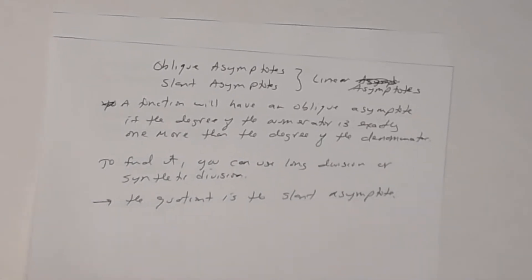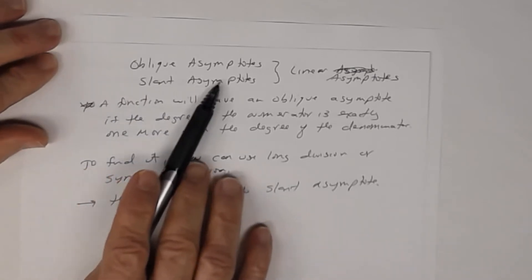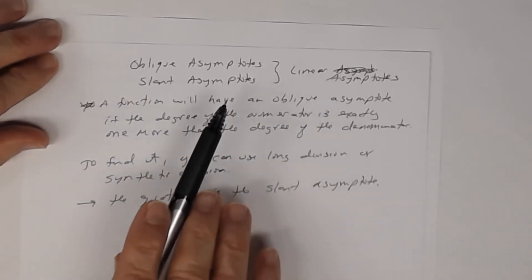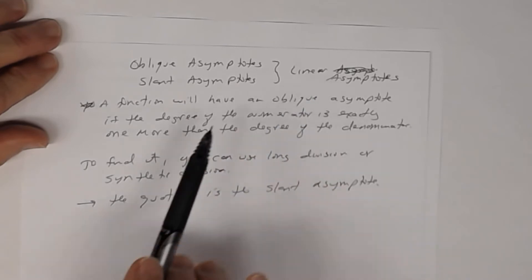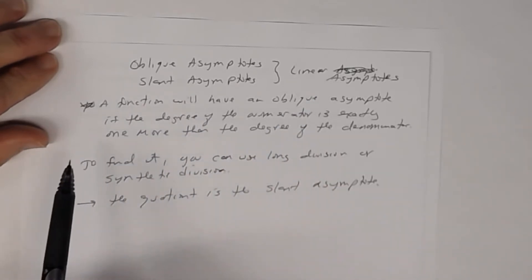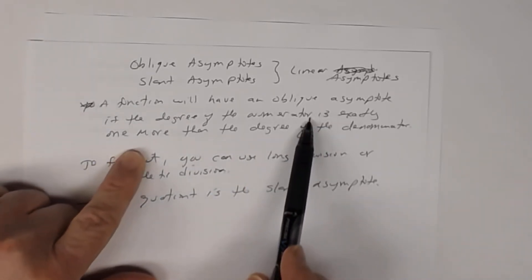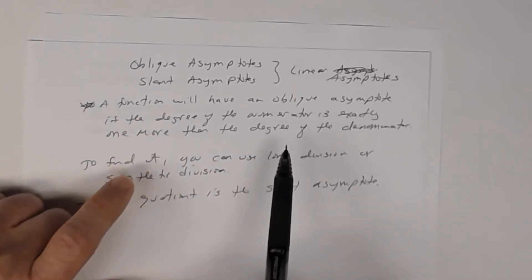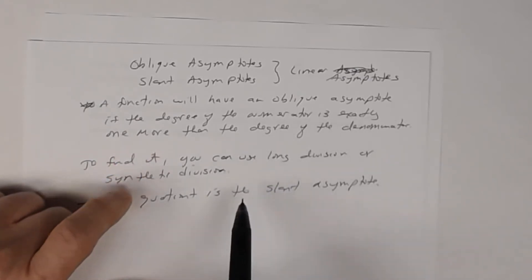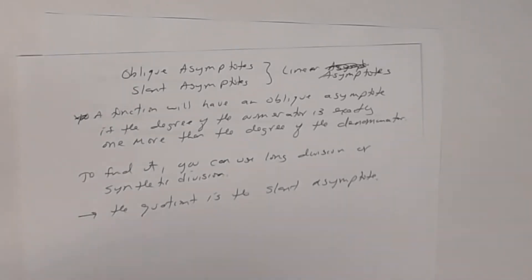Let's remind ourselves about oblique asymptotes. The words oblique and slant asymptotes mean the same thing — they are linear asymptotes, meaning when you draw them they are lines. A function will have an oblique asymptote if the degree of the numerator is exactly one more than the degree of the denominator. If that's the case, you use long division or synthetic division, and the quotient is the slant asymptote.